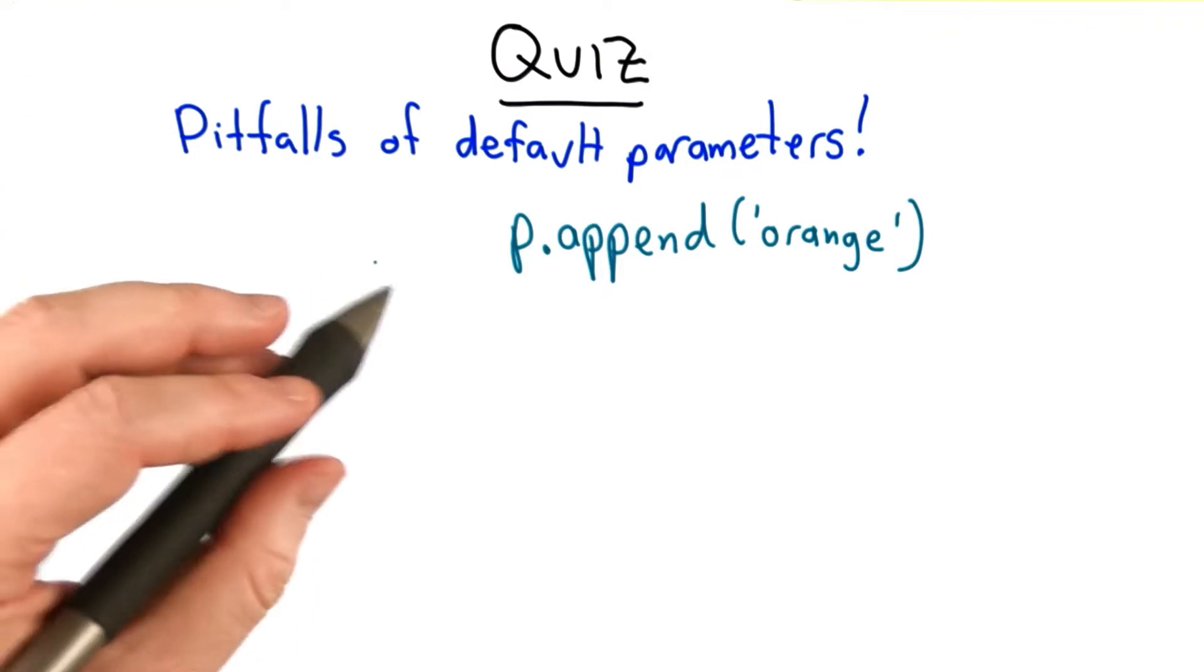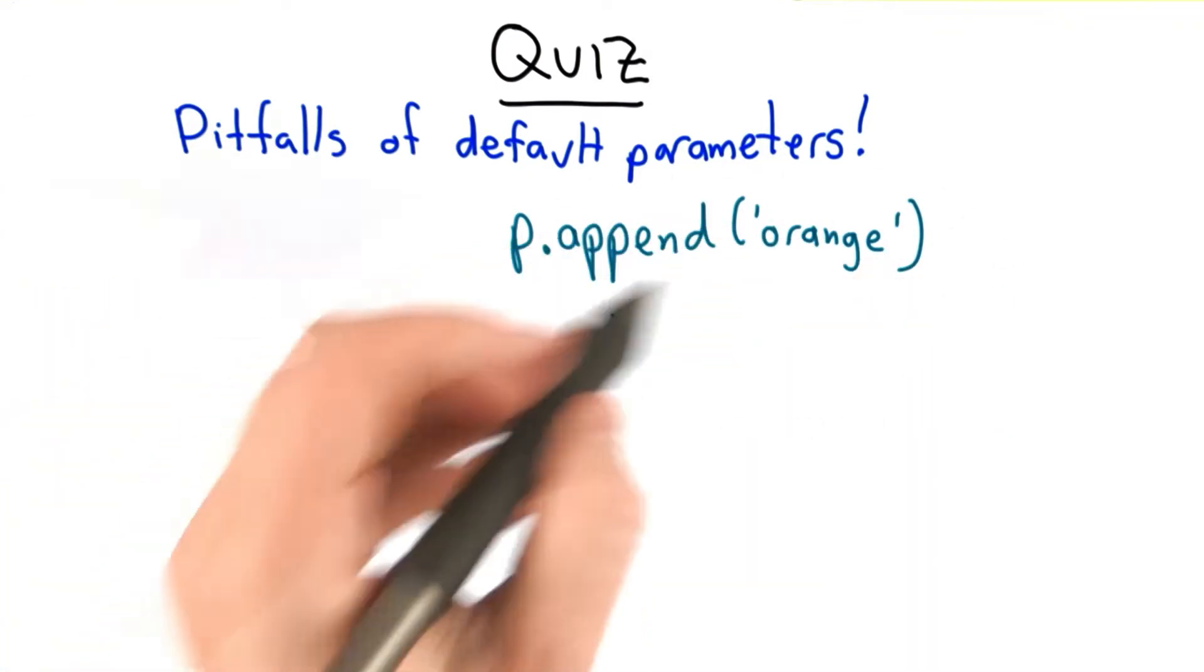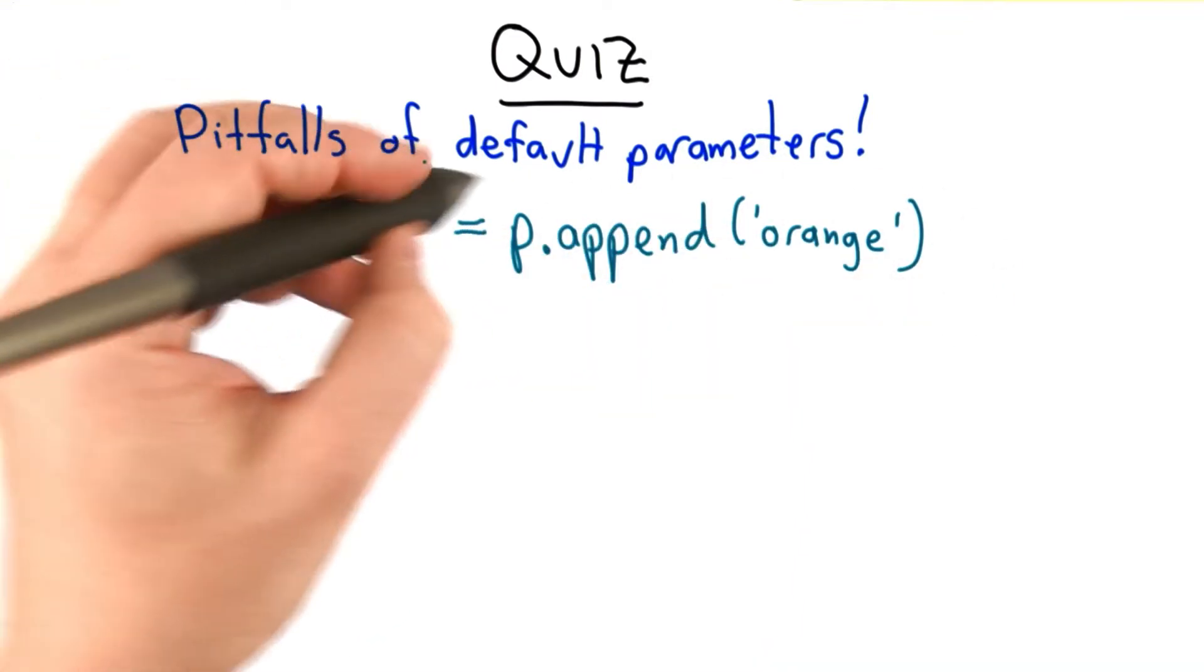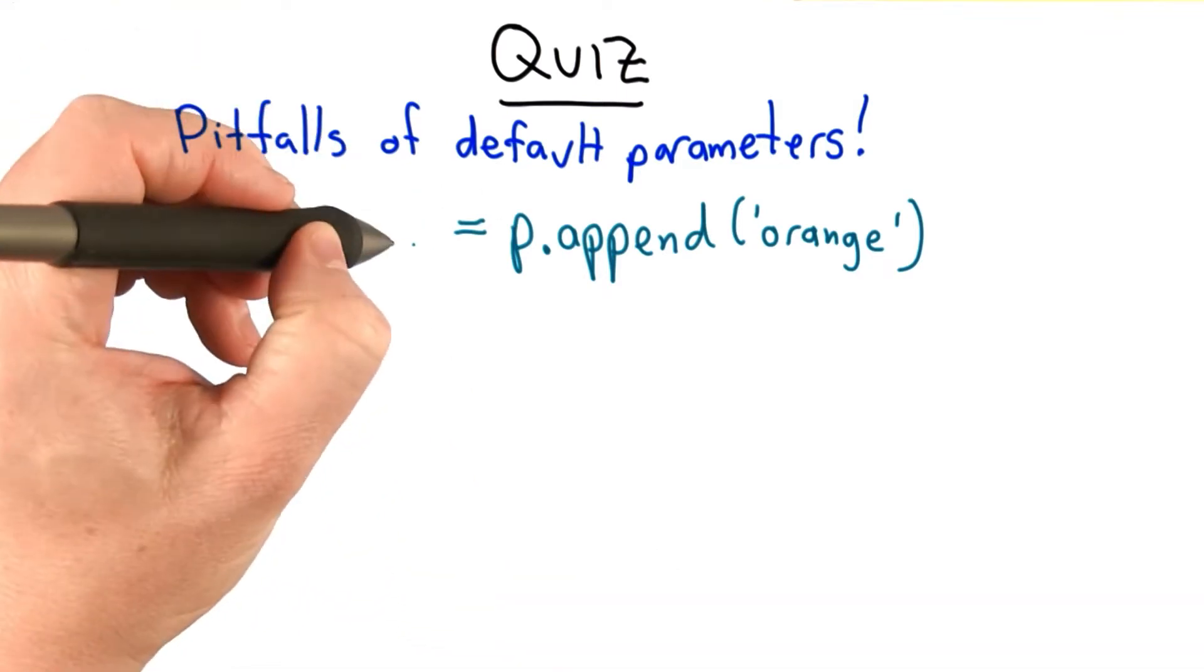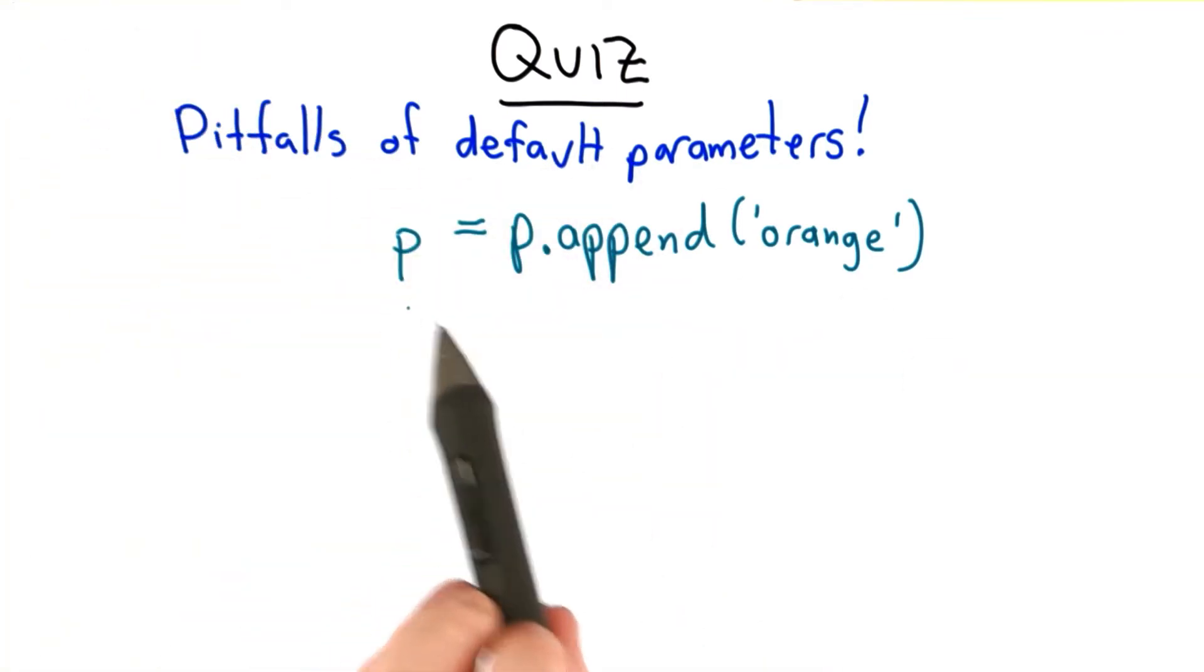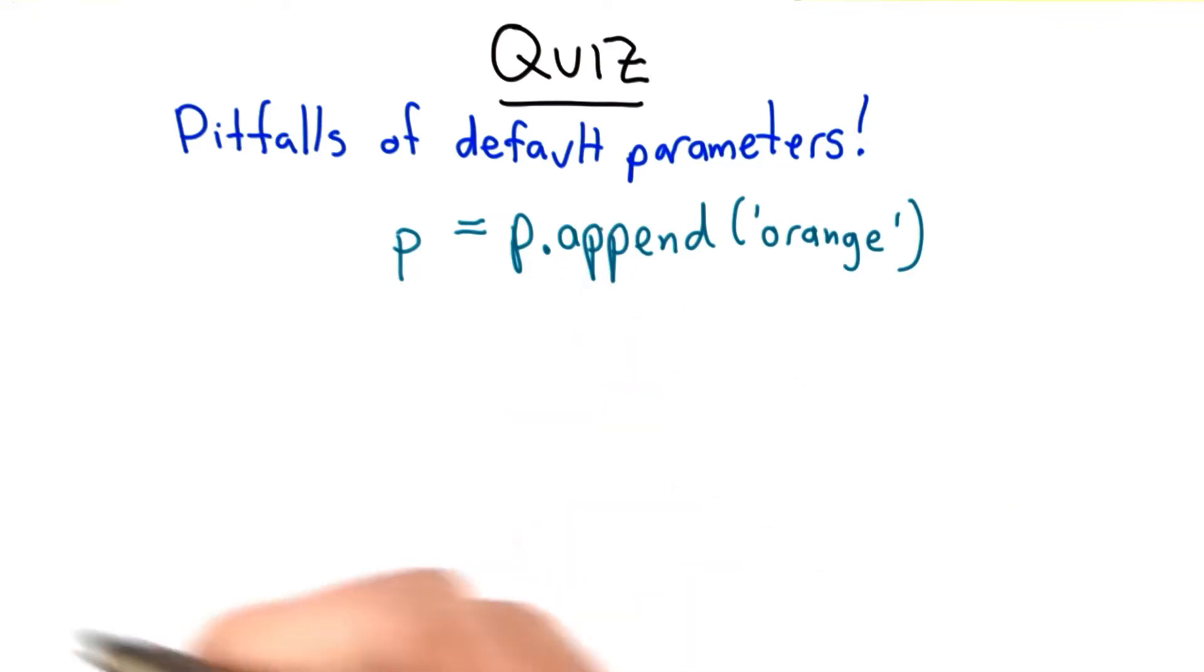One issue some people have with the provided list append method is it doesn't actually return anything. It's a really common mistake to assign to p the result of p.append. In this case, well p.append modifies the value of p, but it doesn't return the list p, it returns None.